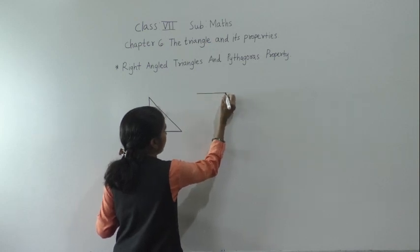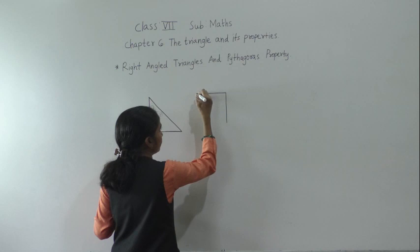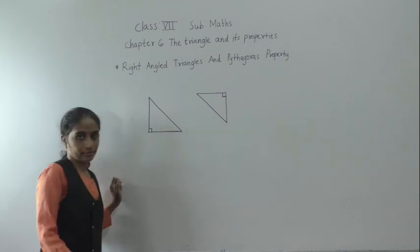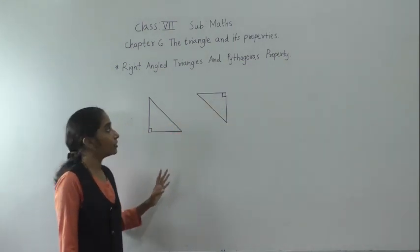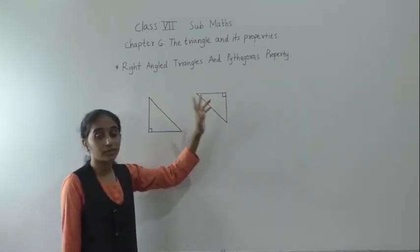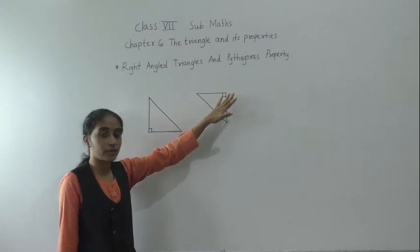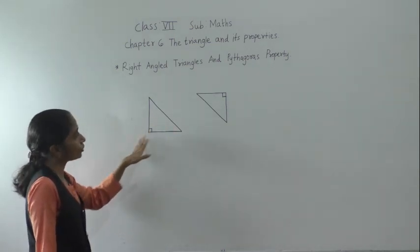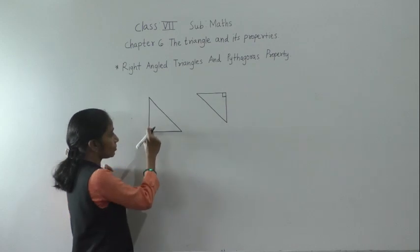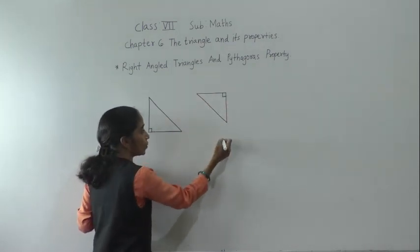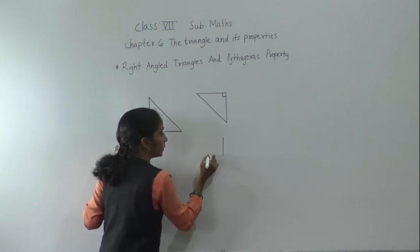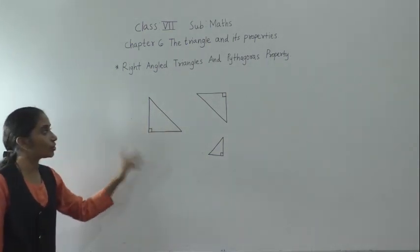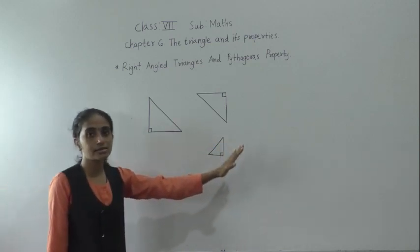A right angle triangle may look like this, or we can draw it this way. This angle is called the right angle, so this triangle is called a right angle triangle. The right angle triangle may come like this, or it may come like this. Here it is called the 90 degree angle, so all of these triangles are called right angle triangles.